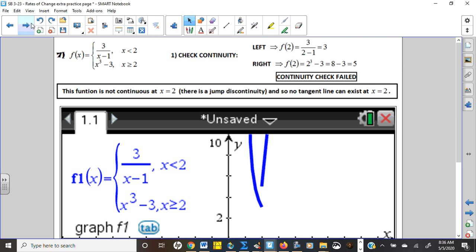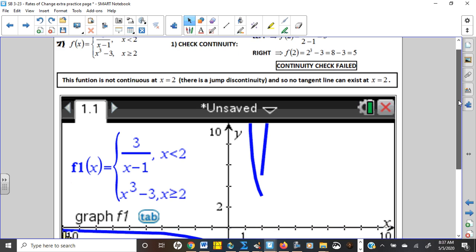Now on 7, you can't have a tangent right based on the first check. When you check to see if the rational function on the left and the cubic function on the right are continuous at 2, that's where they break. They're not even continuous to have a height of 3 and a height of 5. So here's that graph.